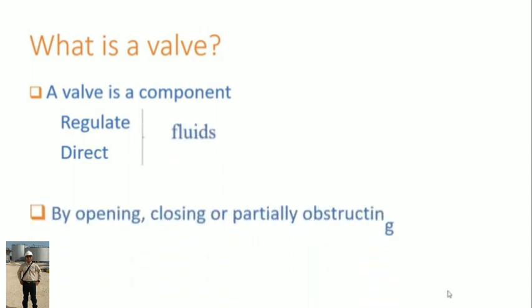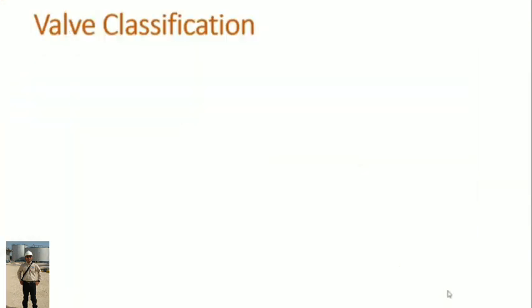By opening, closing, or partially obstructing. Valve classification can be done under two ways. First one is according to function, which means how the valve is going to affect the process or how it changes the flowing fluid.